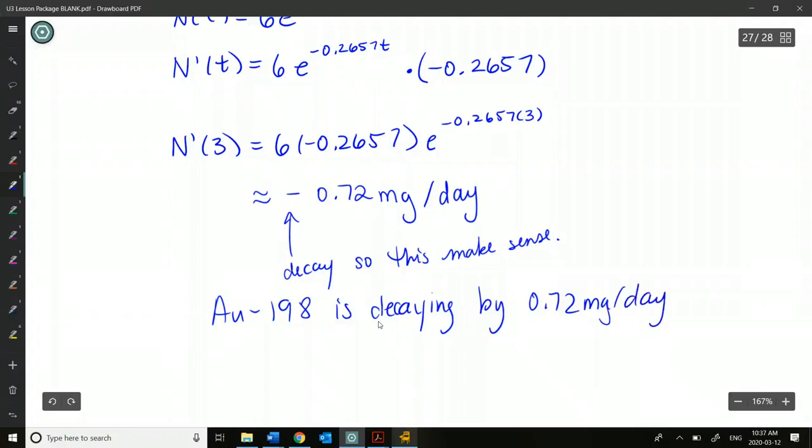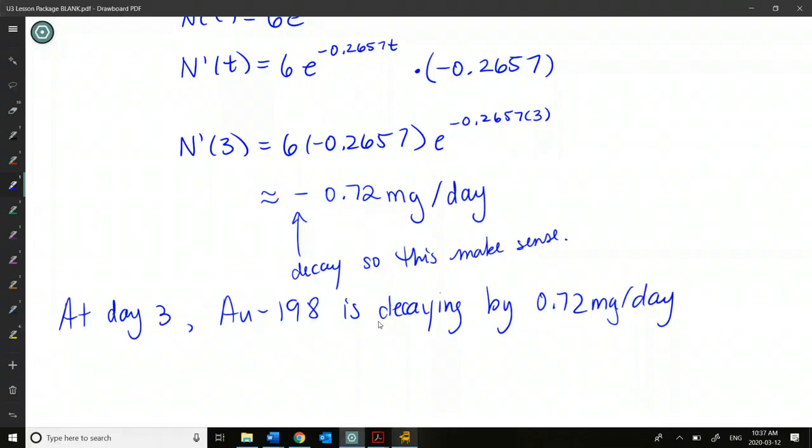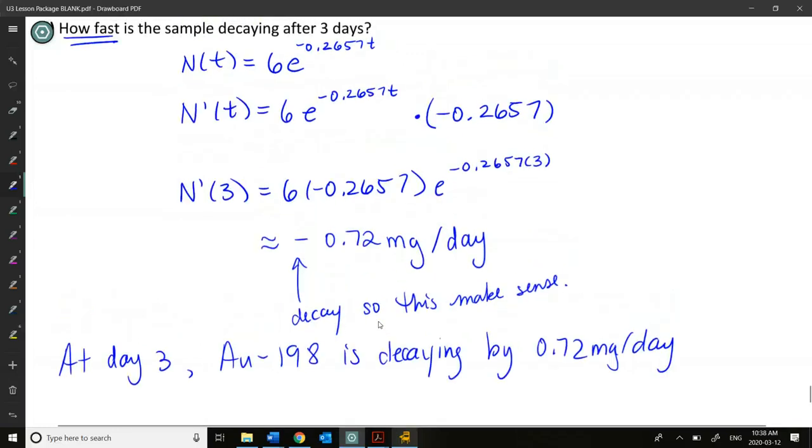So this is actually, this isn't at all points, right? So this is just at particularly day three. So I guess we can say at day three. Our radioactive isotope, GOLD198, is decaying by 0.72 milligrams per day. But we know because this is a curve, the rate of decay is always changing throughout the time that we're looking at. Okay, so I will either say decaying by 0.72 milligrams per day, or you need to say like growing by negative 0.72. Preferably we say it's decaying by 0.72 milligrams per day, which means that we're losing 0.72 milligrams each day at that point. Any questions on this one before we move to the next?